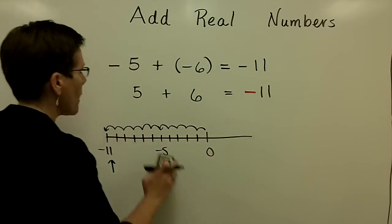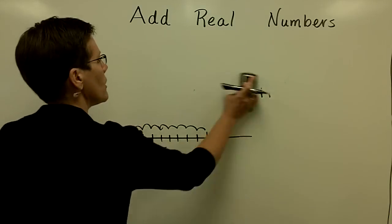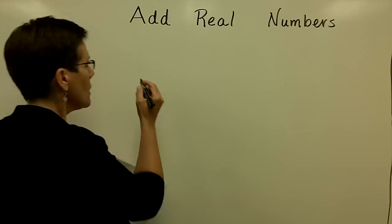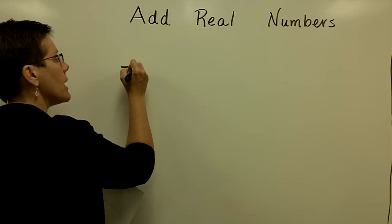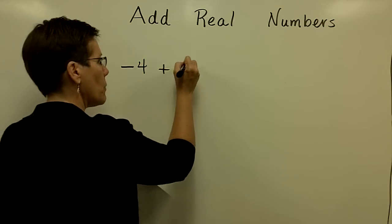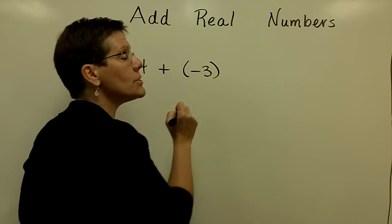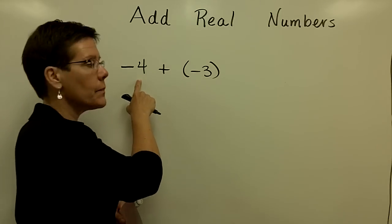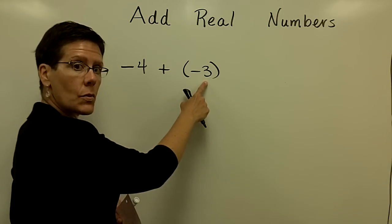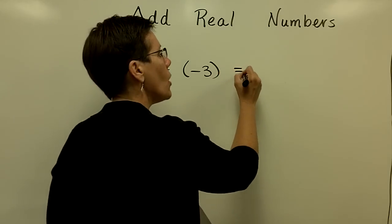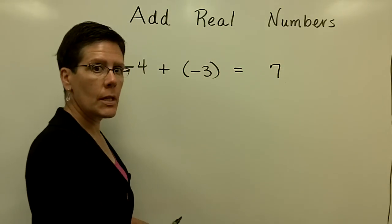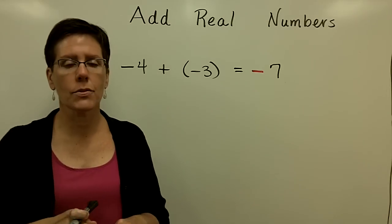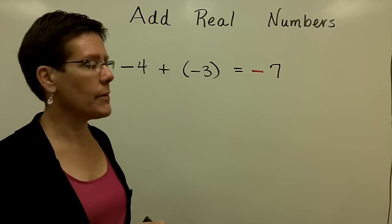Another example of a problem like this, just very similar — no number line. Let's see if we can remember the principle. If I have negative 4 and I want to add negative 3 to that: the absolute value of negative 4 is 4, the absolute value of negative 3 is 3, for a total of 7. I apply the common sign of those two numbers, and I'm at negative 7.